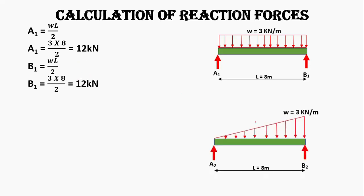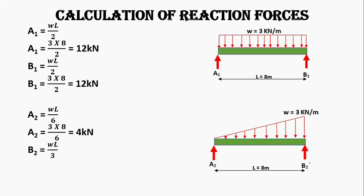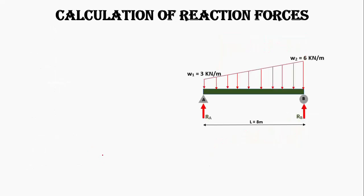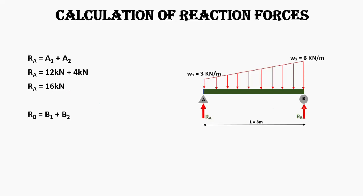Similarly, we will calculate the support reactions A2 and B2 for triangular loading. If you want a detailed explanation for triangular loading, the link is in the description. Using the formulas: for A2 that will be WL/6, giving a reaction of 4 kN, and for B2 that will be WL/3, giving a reaction of 8 kN. Adding A1 and A2 gives RA = 16 kN, and B1 plus B2 gives RB = 20 kN.